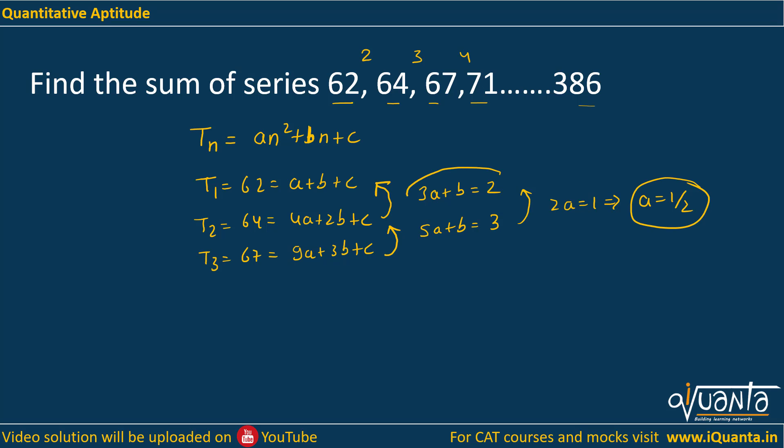As soon as I get A equal to half, I can put it in this equation and find out value of B. B will be equal to 2 minus 3 by 2, which again gives me half. So B is also half, A is half, B is half, so C will be equal to 62 minus 1, which gives us 61.